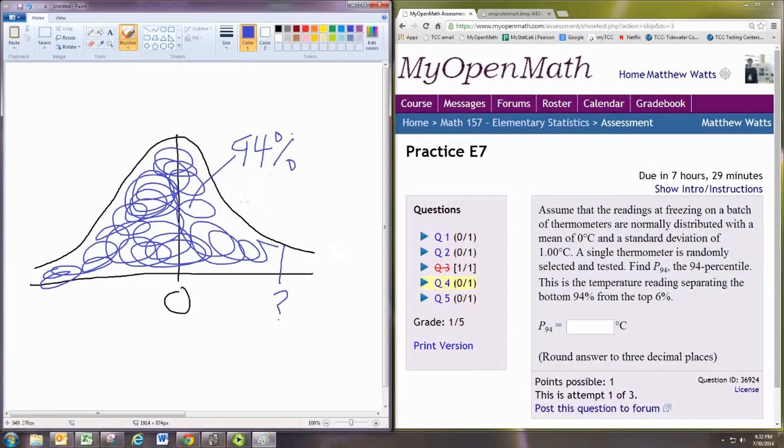Most of the calculator and technology tools will want to know what the area to the left is. You're going to tell it the area to the left is 0.94, which is the same as 94%. That's your area, and it will tell you the value there. Let's do that.